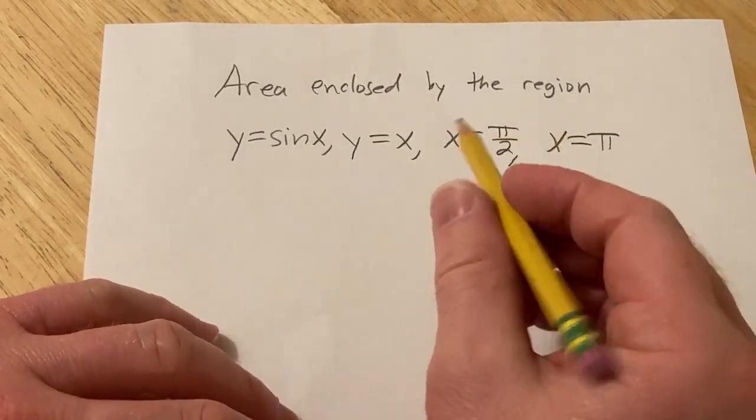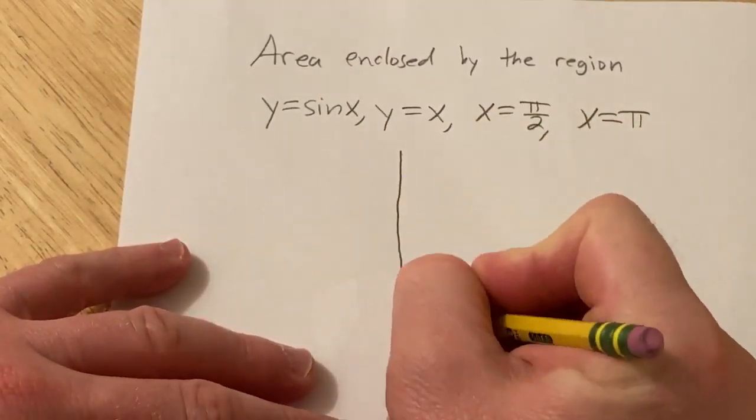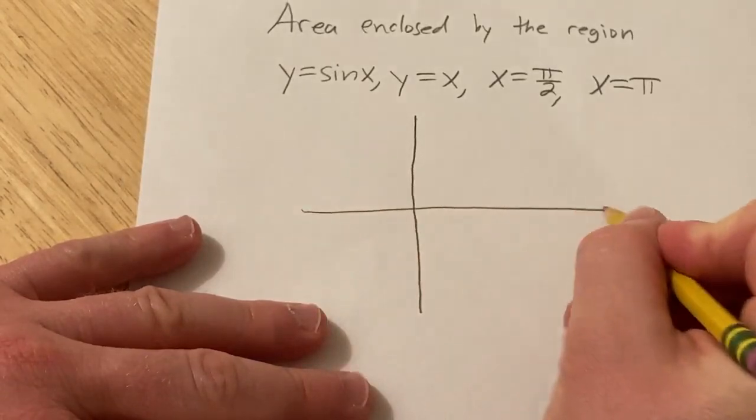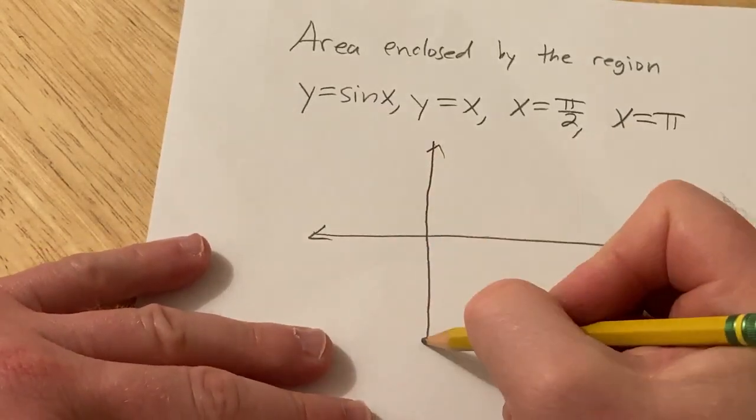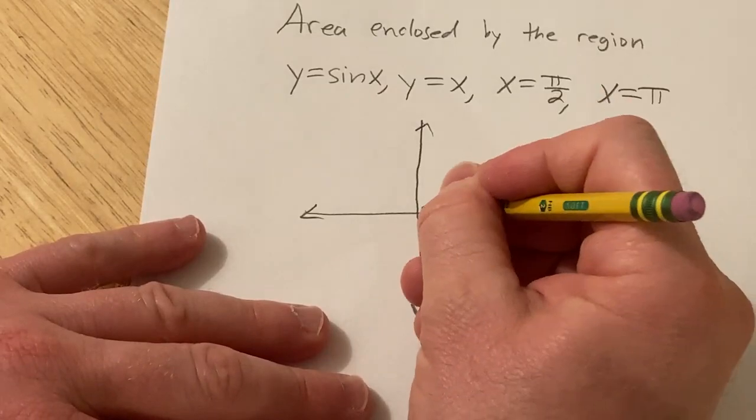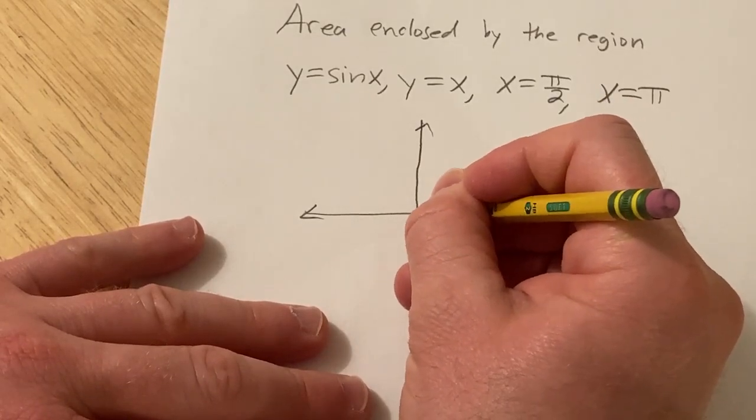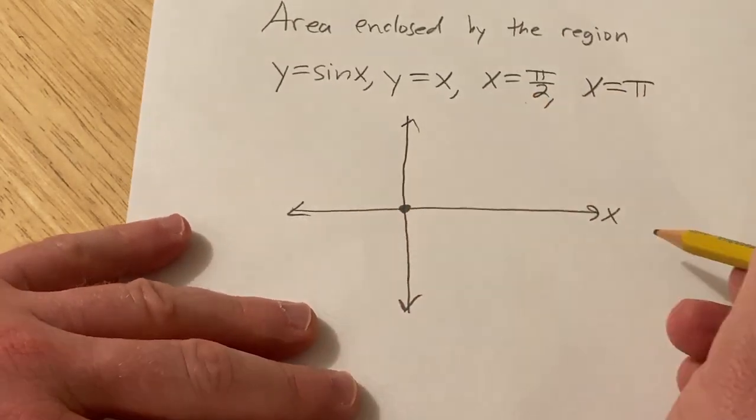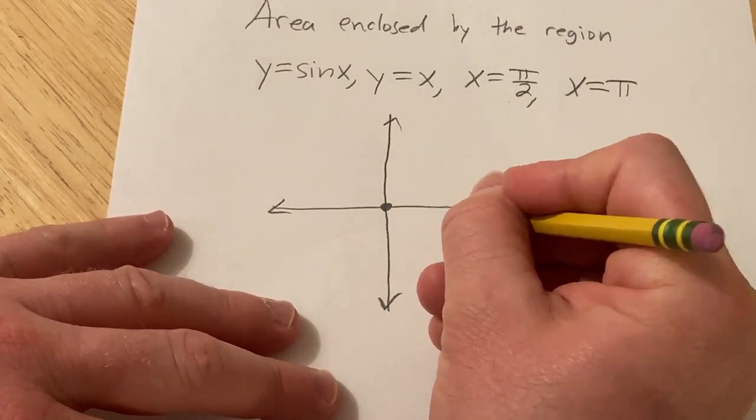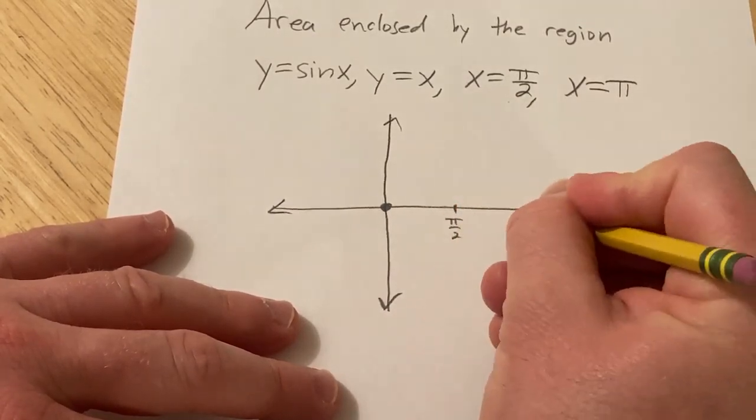So to do this we'll start by drawing a rough sketch. So here's the y-axis, here's the x-axis, and sine of 0 is 0, and we also have pi over 2 and pi. So pi over 2 is, say, here, and pi is, say, here.